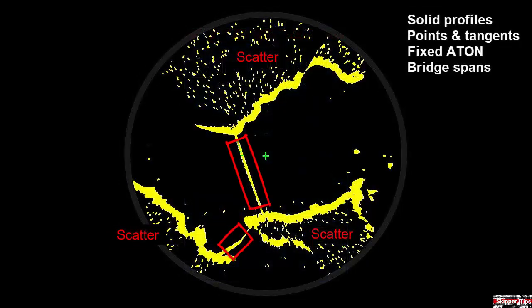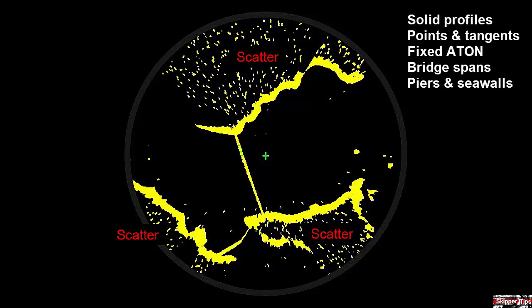Note the two bridge spans on this illustration. These offer good reflectivity and excellent radar targets. You can also use piers or seawalls. Now you know how to use your nautical or electronic navigational chart along with the radar to identify targets with good reflectivity for sailing navigation.